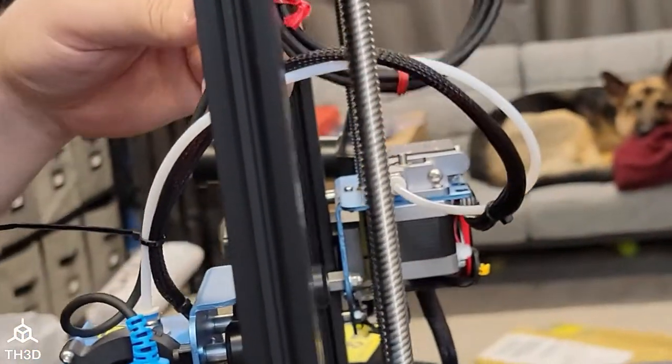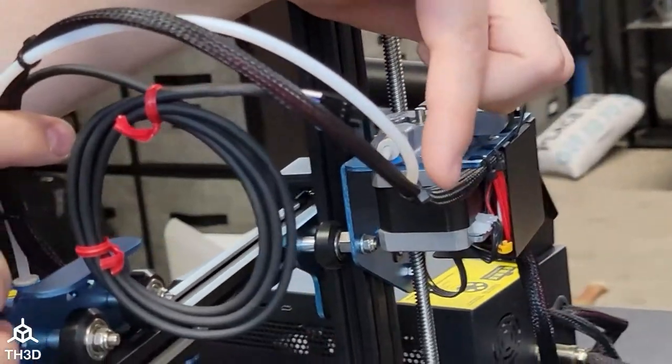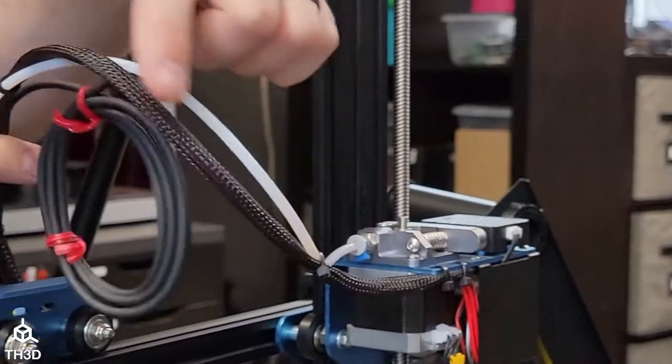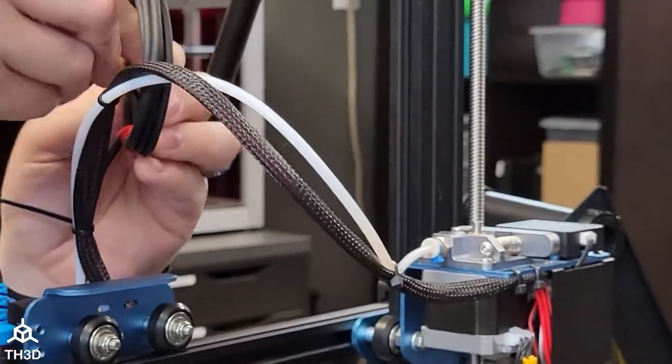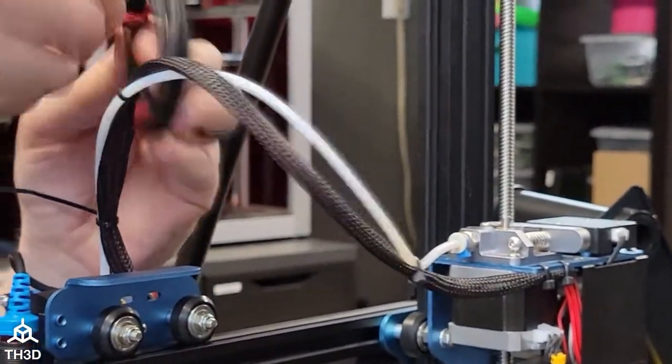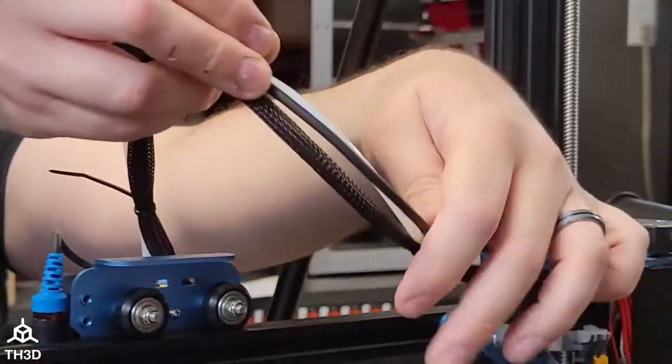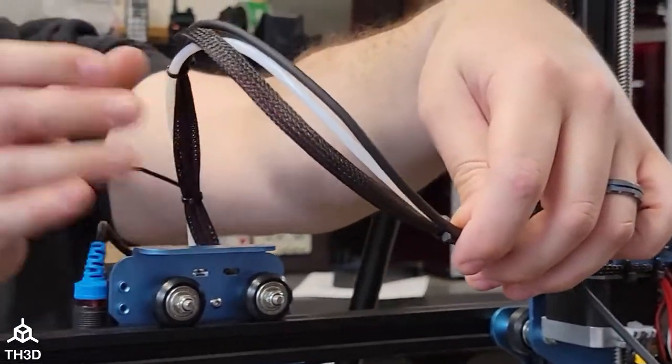Then we're going to follow the cable all the way back using the existing hot end wiring and PTFE tube as a guide. Go ahead and unwrap the wire, and we're going to add about two or three zip ties to have the wire follow the existing cable.